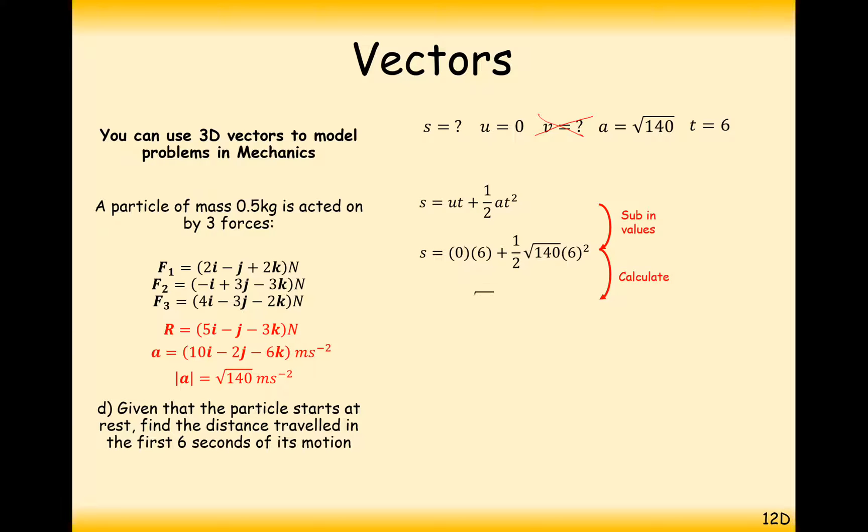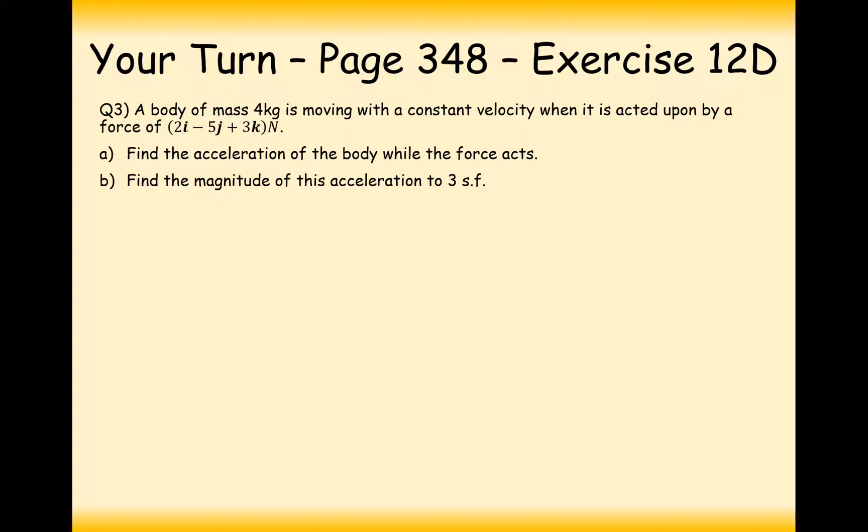Substitute it all into the formula and we get 36 root 35 metres. Okay, so that's basically it then. It is just F equals ma. Resultant forces mean add your vectors together.